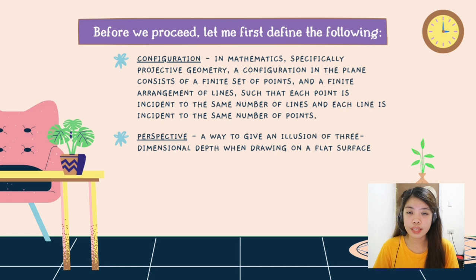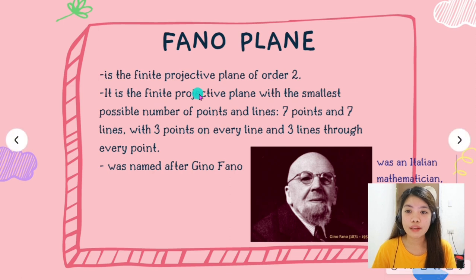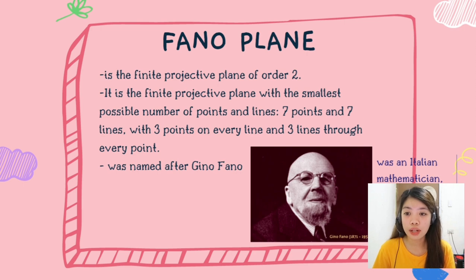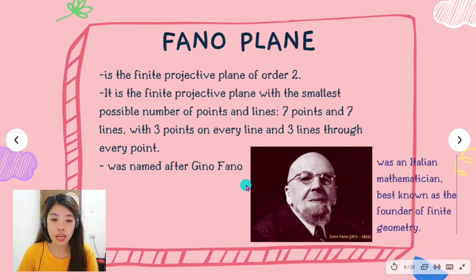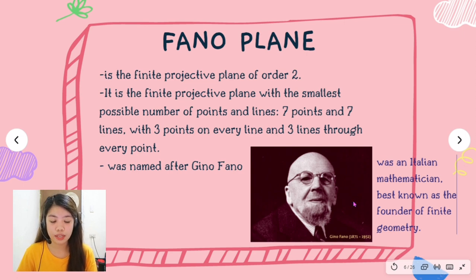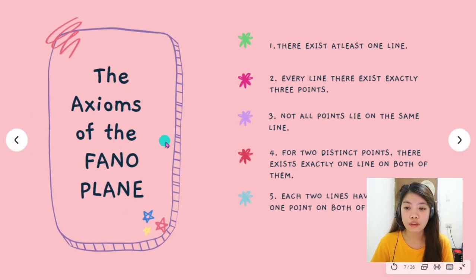Now let us start discussing the first configuration which is the Fano Plane. The Fano Plane is the finite projective plane of order 2. It is the finite projective plane with the smallest possible number of points and lines, consisting of 7 points and 7 lines with 3 points on every line and 3 lines through every point. It was named after Gino Fano, an Italian mathematician best known as the founder of finite geometry. There are 5 axioms of the Fano Plane.